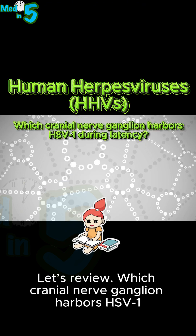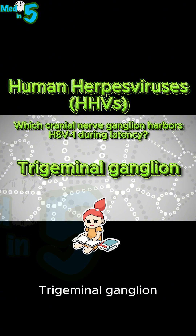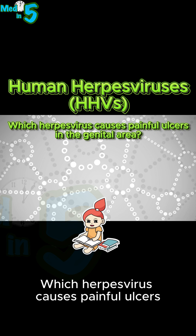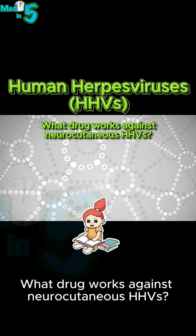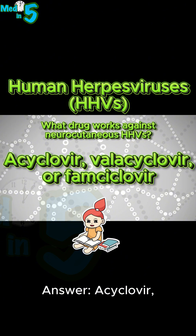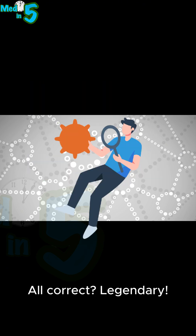Let's review. Which cranial nerve ganglion harbors HSV-1 during latency? Answer: trigeminal ganglion. Which herpes virus causes painful ulcers in the genital area? Answer: HSV-2. What drug works against neurocutaneous HHVs? Answer: acyclovir, valacyclovir, or famciclovir — all correct.